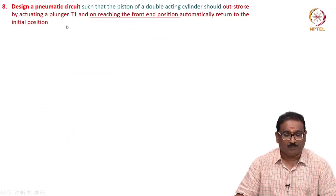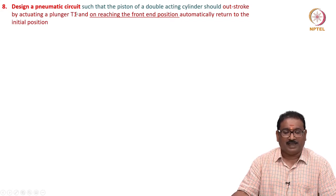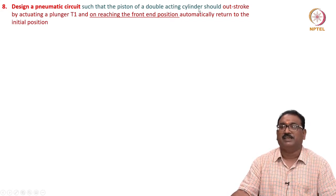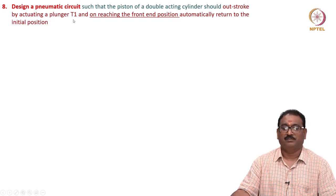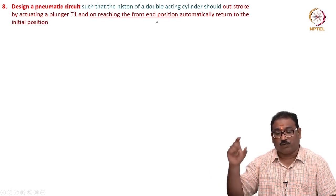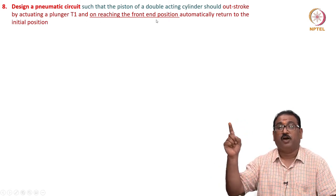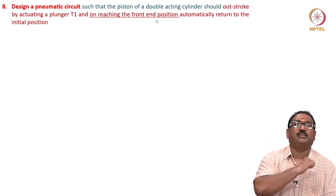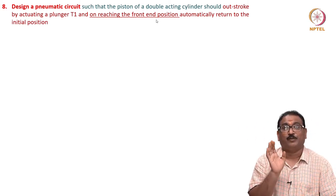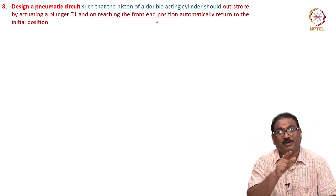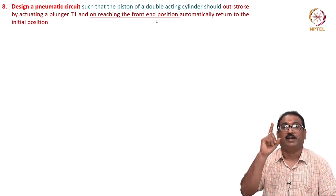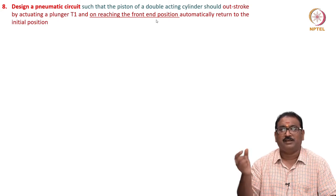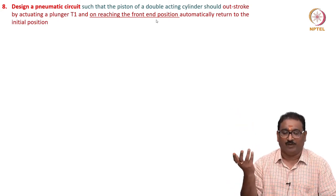We will move on to one more circuit. Design a pneumatic circuit such that the piston of a double-acting cylinder should outstroke by actuating plunger T1, and on reaching the front end position, automatically return to the initial position. Previously you had to press T1 and T2 - T1 for extension, T2 for retraction. Now it does automatic operation. How? By putting a limit switch. Very, very simple.